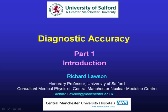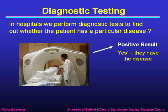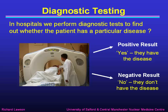Hello, I'm Richard Lawson and this is my lecture on diagnostic accuracy. In part one I'm going to give an introduction to the topic and explain what I will cover in the following parts. In hospitals we perform diagnostic tests in order to find out whether the patient has got a particular disease or not. We perform the test and if we get a positive result we say yes they have the disease, and if we get a negative result we conclude no they don't have the disease.